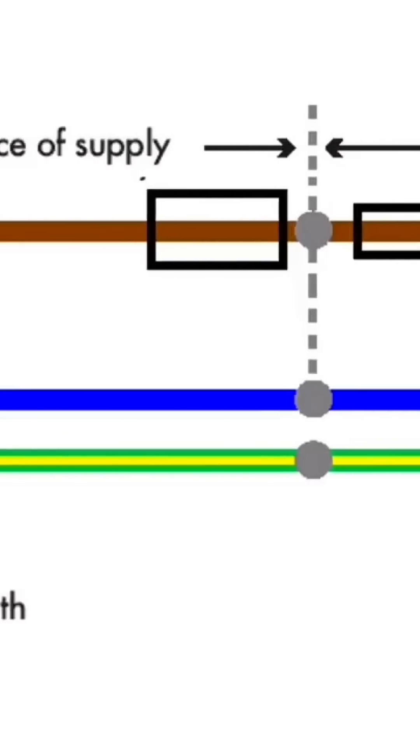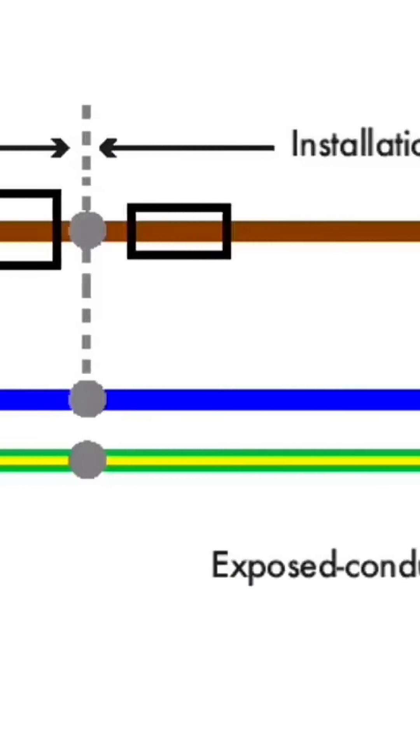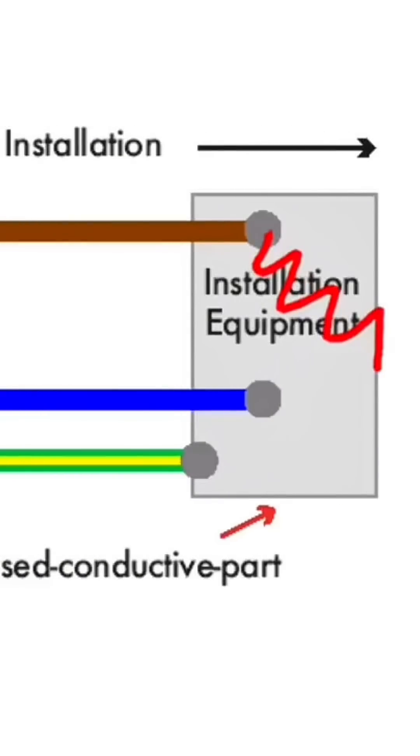The earth fault loop impedance path of an installation connected to a TNS earthing arrangement. In the event of there being a fault between the line conductor in the installation and an exposed conductive part, the fault path or earth fault path would be as follows.